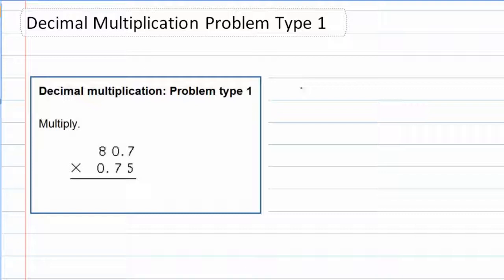In this example, we're multiplying two decimals, so the first thing I want to do is give myself a little bit more room here. We have 8.07 times 0.75.